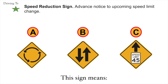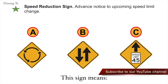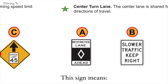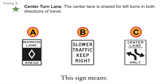The correct answer is C — speed reduction sign. Center turn lane: the center lane is shared for left turns in both directions of travel. The correct answer is C. Center turn lane.